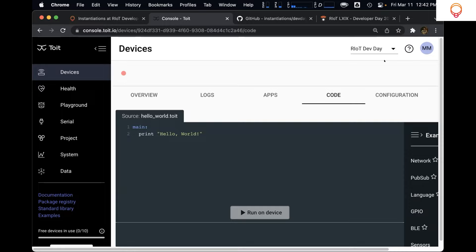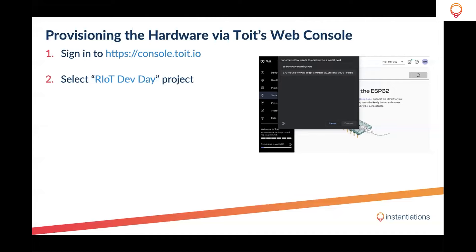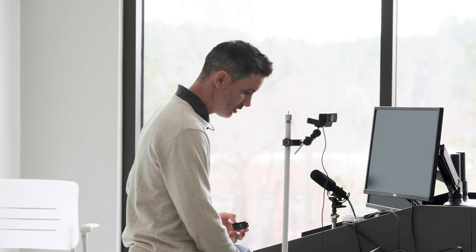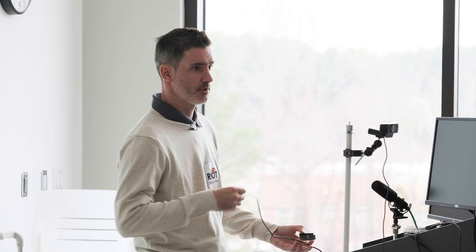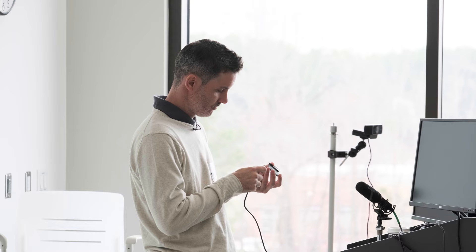The next step is to plug the ESP32 to your computer with the USB cable. I will follow exactly the same steps — I will plug it. Once you plug it, you should see a red LED, which means the device receives power and has booted. So we are ready to make the provision of the hardware.